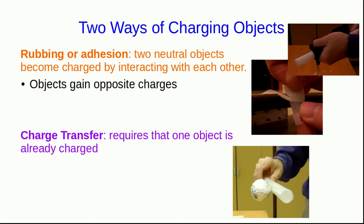For rubbing and adhesion, we started off with two neutral objects and after they've interacted with each other, they have opposite charges. So this is a process of charge separation.